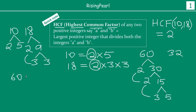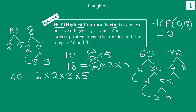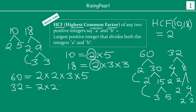So 60 = 2 × 2 × 3 × 5. Similarly for 32, I can write it as 4 × 8. Four can be written as 2 × 2, and eight as 2 × 4, and that four as 2 × 2. So 32 = 2 × 2 × 2 × 2 × 2 — five twos.